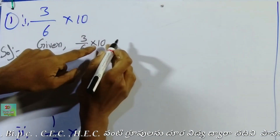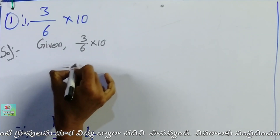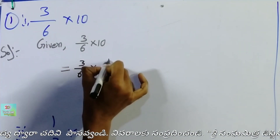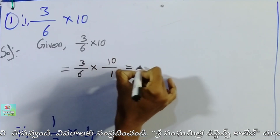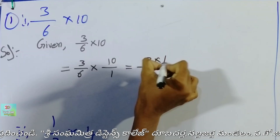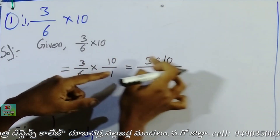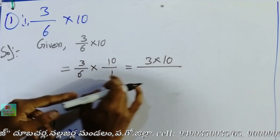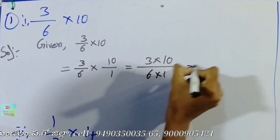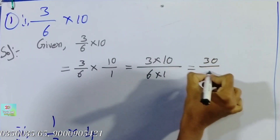So we have 1 in the denominator. So 3 by 6 into 10 is 1. The next step is the multiplication is already set up. So we can do the multiplication. 6 into 1, 3 times are 30.